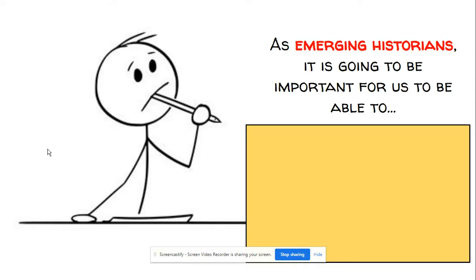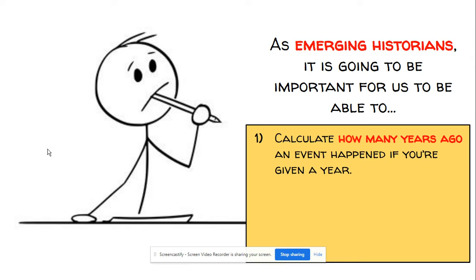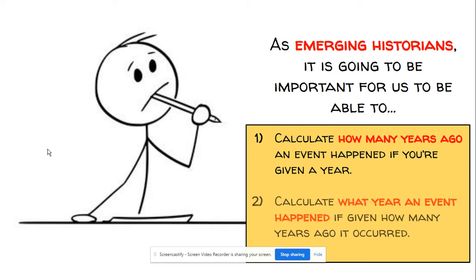In this video I'm going to cover those two topics with you. As emerging historians, it's going to be important for us to be able to do the following skills. I want us to be able to calculate how many years ago an event happened if I give you a year, and also calculate what year an event happened if you're given how many years ago it occurred.